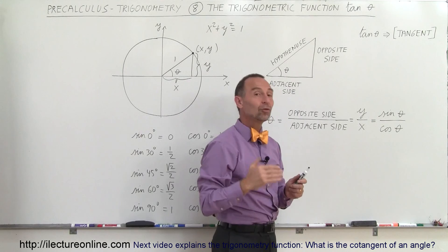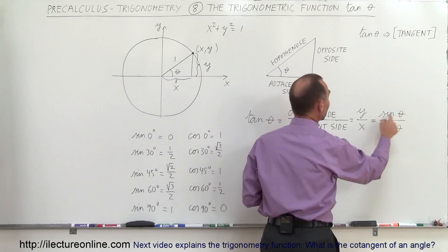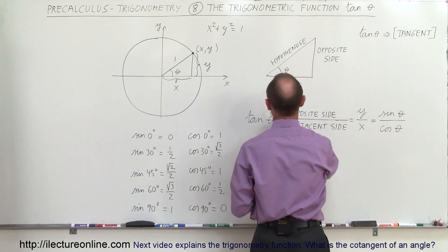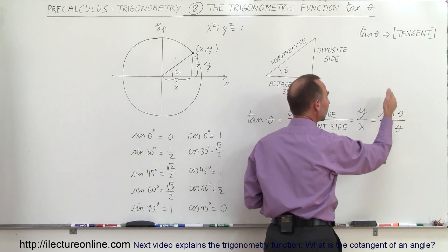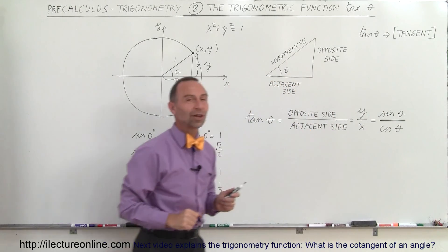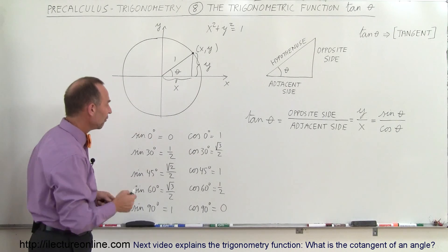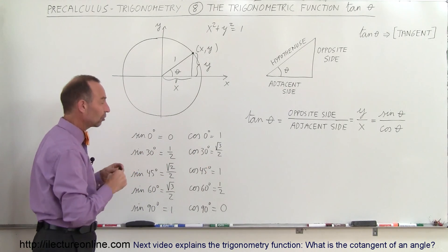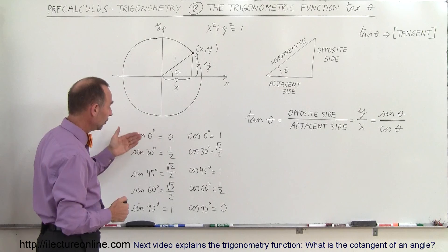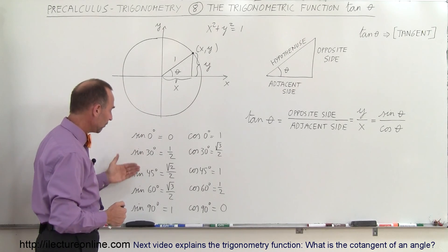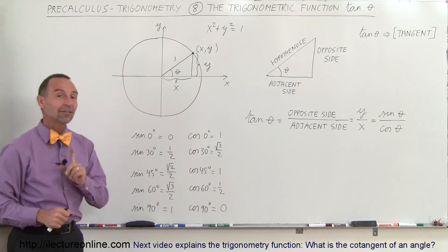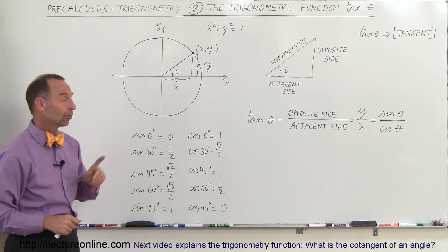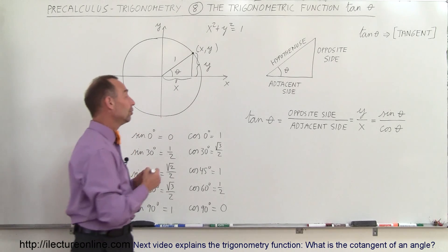Since y is equal to the sine of theta and x is equal to the cosine of theta, we can say that the tangent of theta is equal to the ratio of the sine of theta divided by the cosine of theta. In the previous two videos, we found the values for the sine and cosine of theta for the angles of 0, 30, 45, 60, and 90 degrees. Let's now figure out the tangent values based on those.